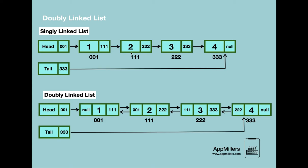So if you want to traverse from node 3 to node 2, it's not possible in case of single linked list. This is a limitation of single linked list, because reverse traversal is not possible. To overcome this problem, we have a double linked list. In the double linked list, each node contains two references that reference to the previous and next node. This allows us to traverse forward and backward, so traversal is possible in both ways.